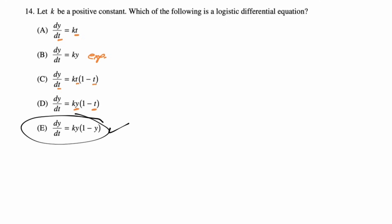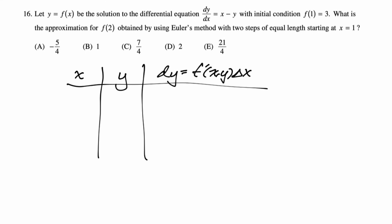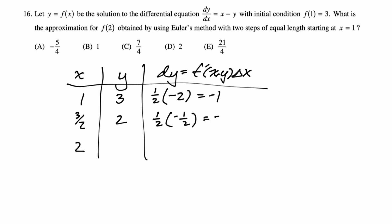This is Euler's method. Set up a table with x, y, and dy = f'(x, y)·Δx. Our initial pair is (1, 3). Going from x = 1 to x = 2 with two equal steps, each step is 1/2. At (1, 3): dy/dx = 1 − 3 = −2, so Δy = −1, giving y = 2. At (3/2, 2): dy/dx = 3/2 − 2 = −1/2, Δy = −1/4, so y = 8/4 − 1/4 = 7/4. Answer is C.